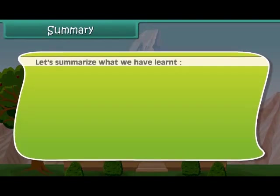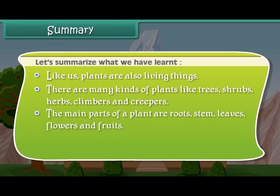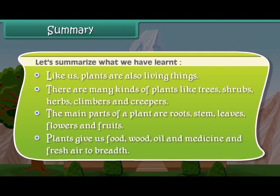Now friends, let us summarize what we have learned so far. Like us, plants are also living things. There are many kinds of plants like trees, shrubs, herbs, climbers, and creepers. The main parts of a plant are roots, stem, leaves, flowers, and fruits. Plants give us food, wood, oil, medicine, and fresh air to breathe.